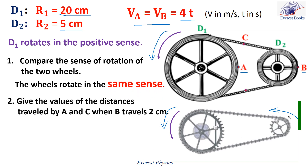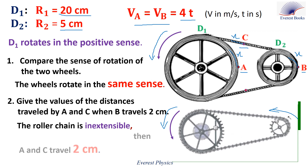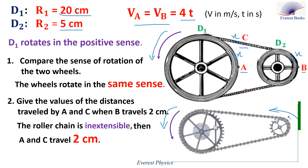Number two: give the values of the distances traveled by A and C when B travels 2 centimeters, where C is a point on the roller chain. Look at this figure. As B travels a distance X, then C travels the same distance X, since the roller chain is inextensible, and also A travels the same distance X. Then, as B travels a distance of 2 cm, then A and C travel the same distance, which is 2 cm.